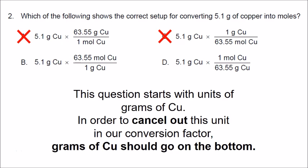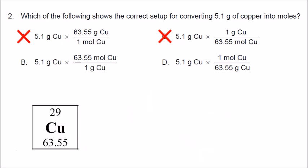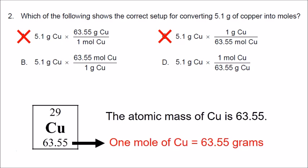Although choices B and D both have grams of copper on the bottom, we know from the periodic table that one mole of copper is equal to 63.55 grams. In choice B, it says 1 gram of copper is equal to 63.55 moles — that's incorrect, so we can eliminate choice B. The correct answer is D.